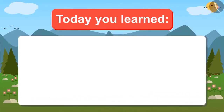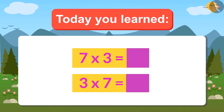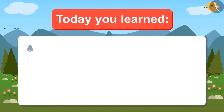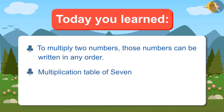Today you learned that whether you multiply 7 by 3 or 3 by 7, the answer will be 21. That means when two numbers have to be multiplied, they can be written in any order — the answer will be the same. We also learned the multiplication table of 7. Now write the 7 times multiplication table and memorize it by singing.